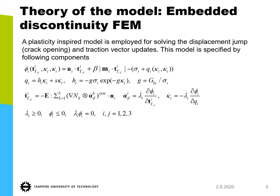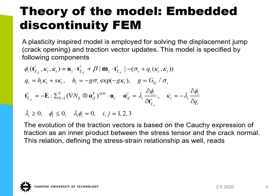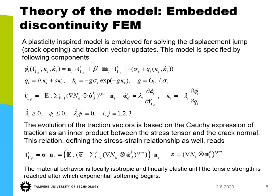With these we fulfill the dissipation inequality and the consistency condition — this is the so-called consistency formulation. The evolution of the traction vectors is based on Cauchy's expression of traction as an inner product between the stress tensor and the crack normal. This relation defines the final stress-strain relationship, where we have the elasticity tensor, regular finite element strain, and then the enhanced terms. The material behavior is locally isotropic and linearly elastic until the tensile strength is breached, after which exponential softening expressed in terms of the crack opening begins.